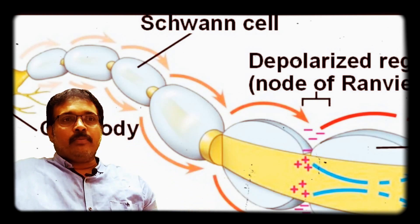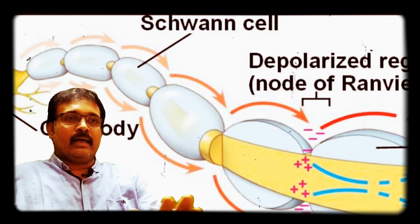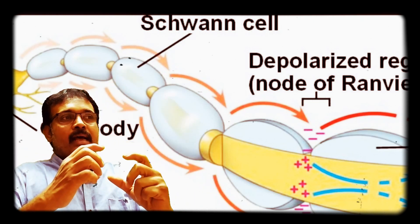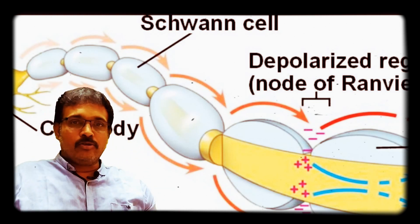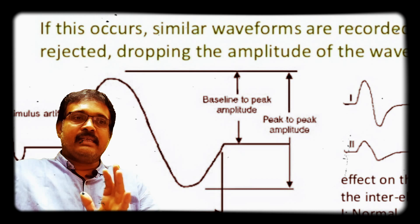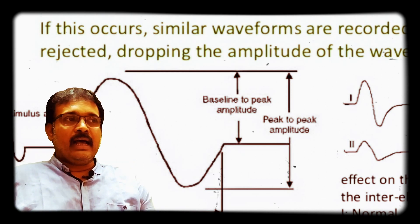When the patient gets affected from a demyelinating disorder, the size of the myelin is reduced. Saltatory propagation is reduced, so conduction velocity is decreased in this type of patient.